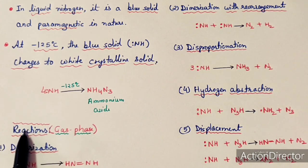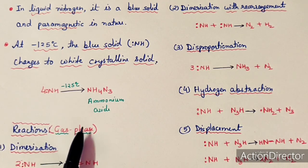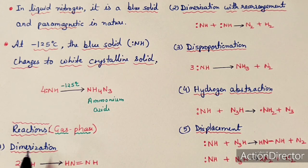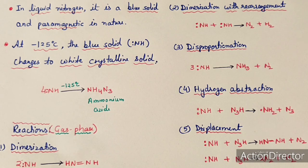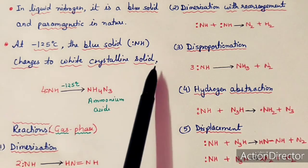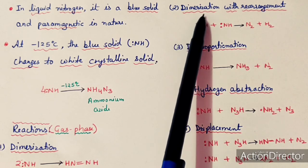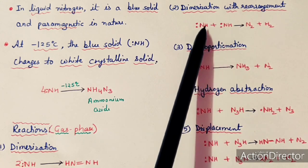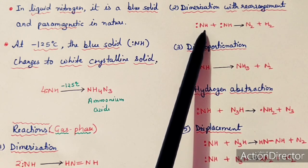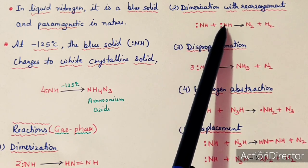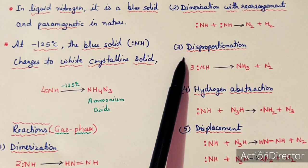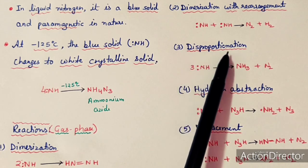Now the reactions of imine free radical in the gas phase: the first kind is the dimerization reaction, where two molecules of NH join together and dimerize to form a dimer. The second kind is dimerization with rearrangement, where first dimerization takes place and then after rearrangement, N₂ and H₂ are formed.